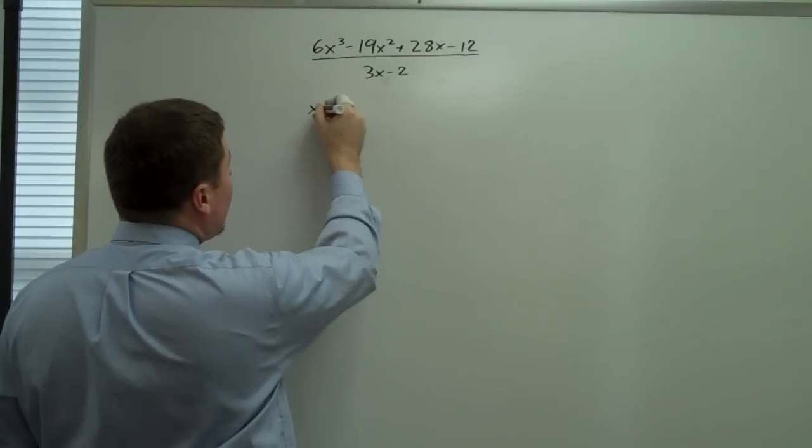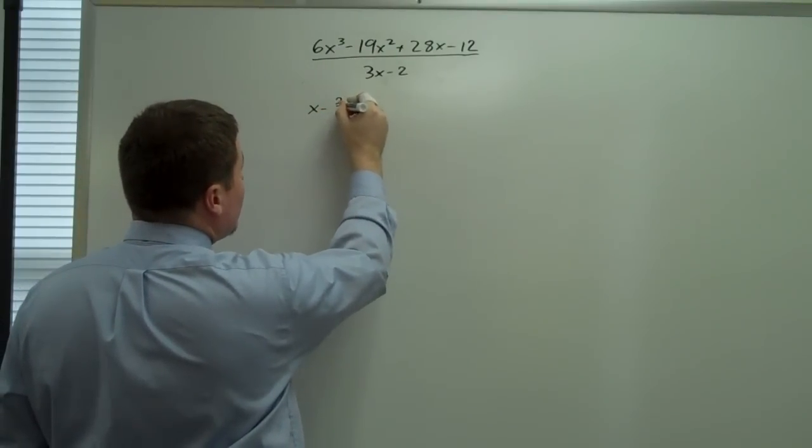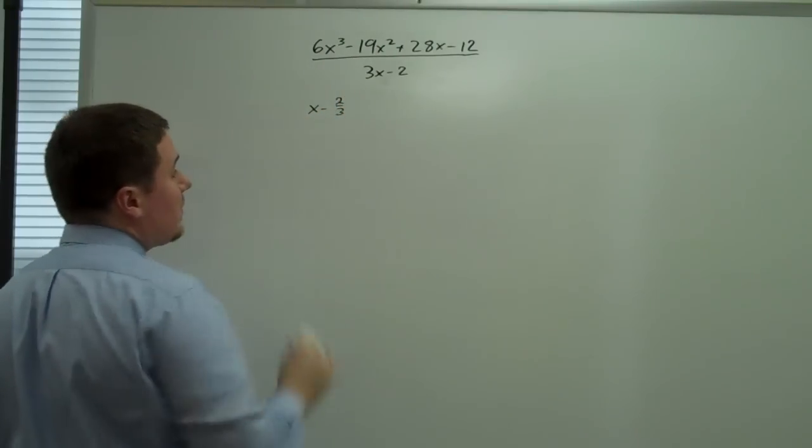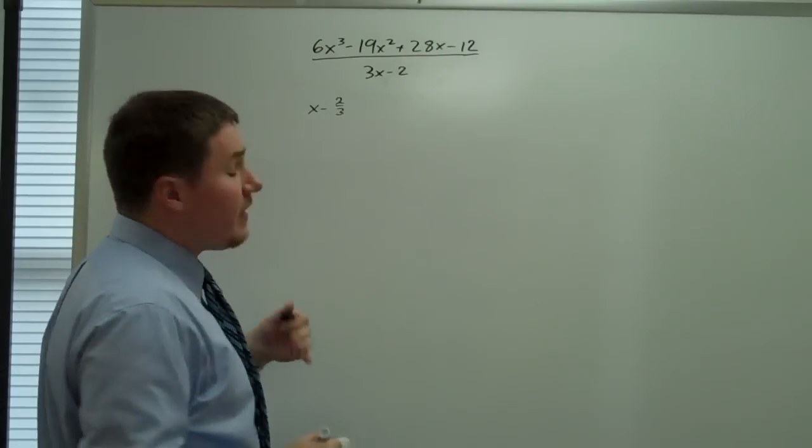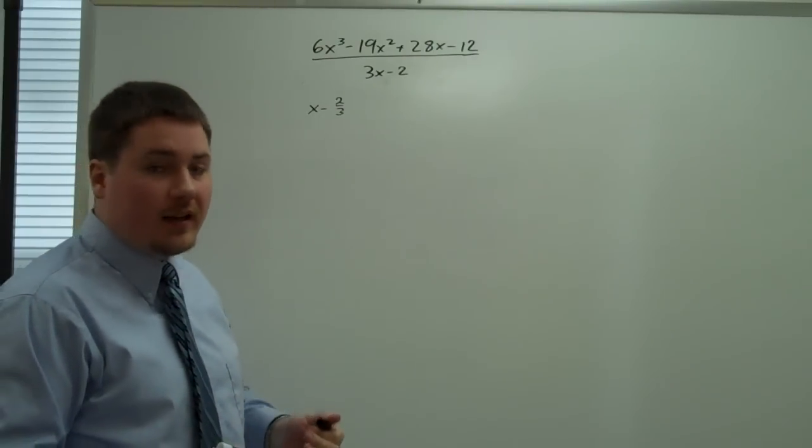So we're really going to divide by x minus 2 thirds, where this is the root associated with the factor. Basically set this equal to 0 and solve. That's going to have some implications for our final answer.